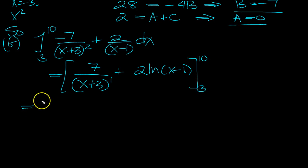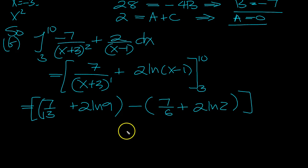So what's that then? Put 10 in, 7 over 13, top value, take bottom value. Okay, 2 log 9 minus bracket 7 over 6 plus 2 ln 2.